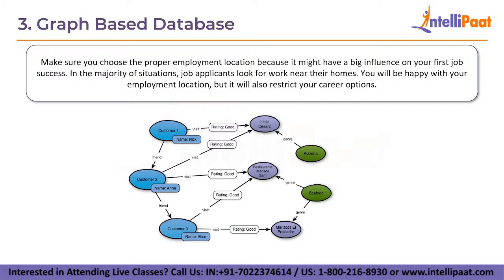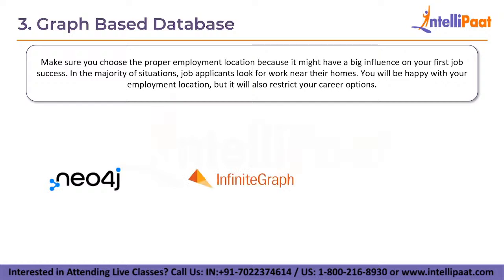Next is the graph-based database. A graph database maintains entities as well as the relationships among those entities. The entity is presented as a node with the relationship represented as edges. An edge represents a connection between two nodes, and every node and edge is identified by a unique identifier. E-commerce recommendation engines employ graph databases to give customers accurate suggestions and updates on new goods, improving sales and meeting customer demands. A graph database is multi-relational, as opposed to a relational database where tables are loosely connected. Relationship traversal is quick since they are already stored in the database. Graph databases are commonly used for social networks, logistics, and topographical data. Popular graph-based databases include Neo4j, Infinite Graph, and OrientDB.